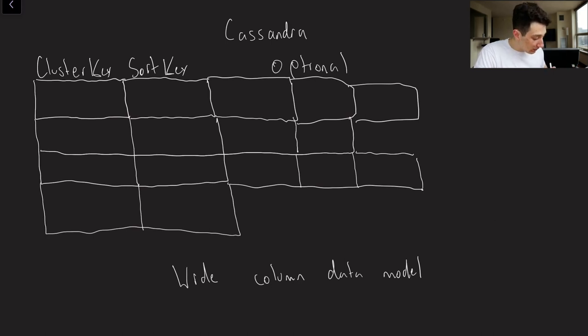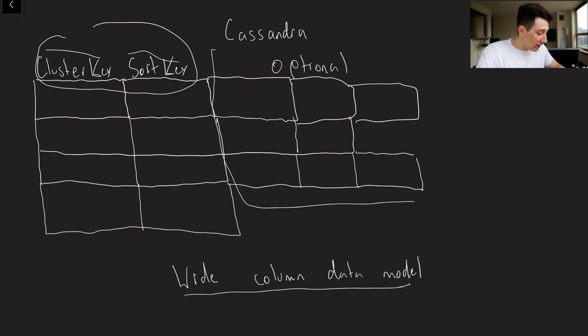Cassandra uses something known as the wide column data model. So instead of being a nested structure, really the only requirements in Cassandra for your data is that you have these two fields right here, and frankly really only a cluster key. The sort key is optional. Basically we've got a cluster key, we've got a sort key, and then pretty much everything else in every single row is optional. You can either have them there or you don't have to. It's really not too big of a deal.